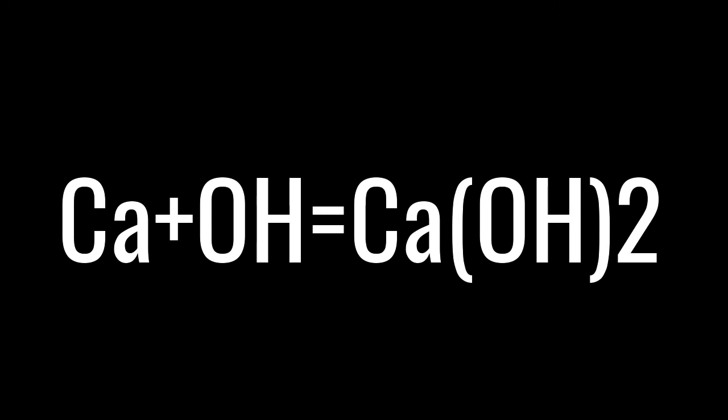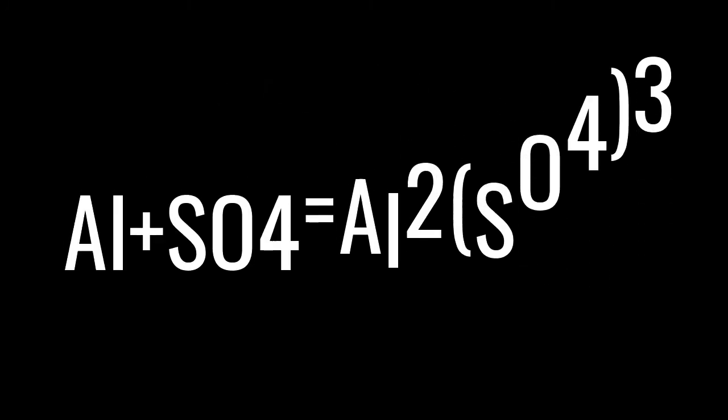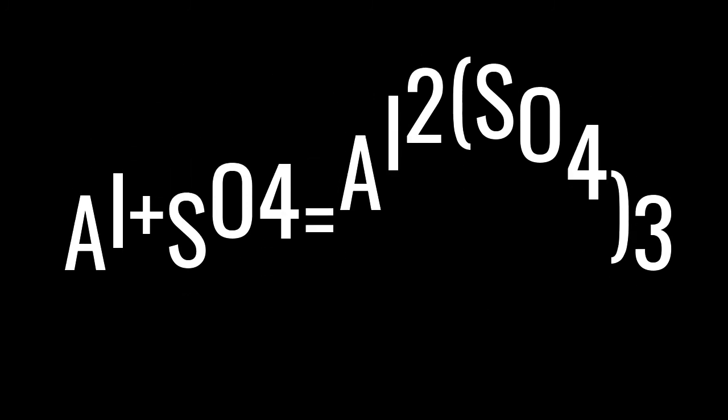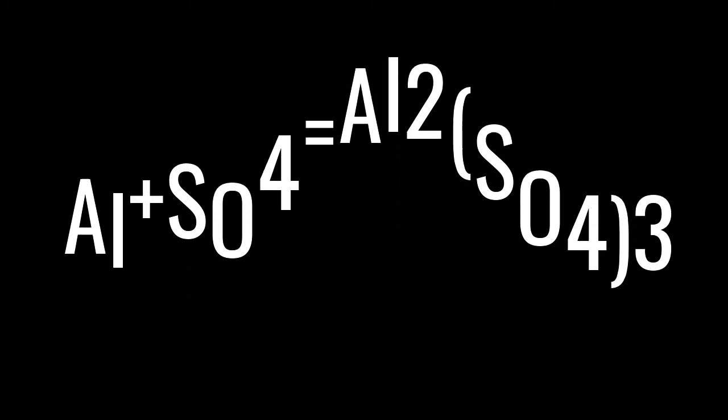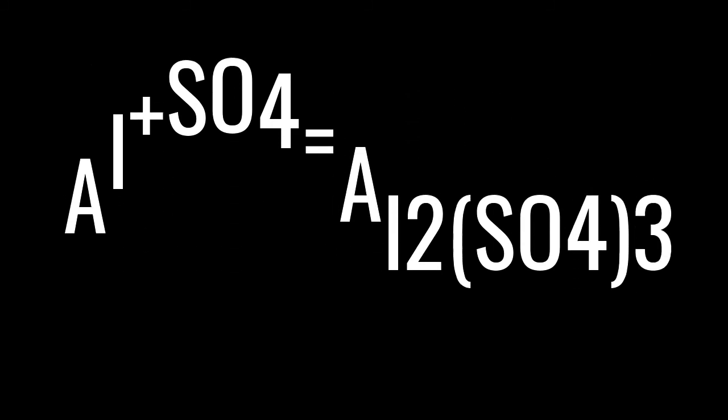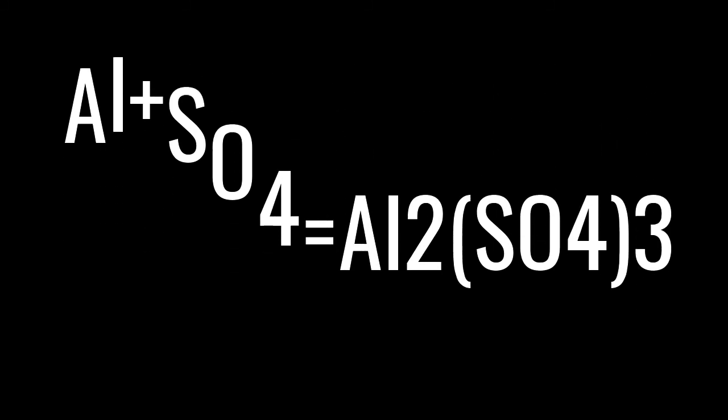Now we have Al plus SO4. Al has valency of three, SO4 having valency of two. The exchange of valency becomes Al2(SO4)3. So aluminum gives SO4 three, SO4 gives aluminum two.